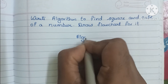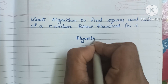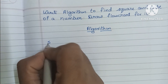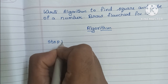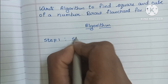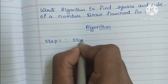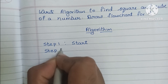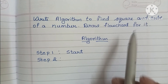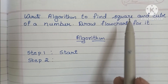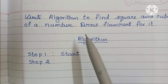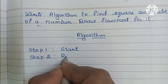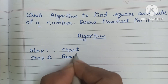An algorithm is a step-by-step process to solve a problem. Step 1: an algorithm always starts with a start statement, so first we have to write the start statement. In step 2, we have to read the input value. Here we have to find square and cube of a number, so we have to read a number — read N.